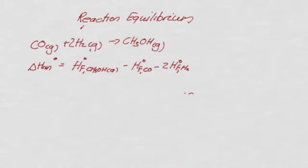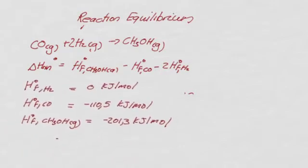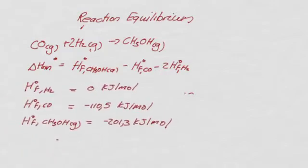We need to look in tables to find values. If we look in the tables, we see that the enthalpy of formation of hydrogen is zero, because that's its standard state. The enthalpy of formation of CO is minus 110 kilojoules per mole, and there's the enthalpy of formation of methanol in the gas phase. Be very careful — the values you use here must correspond to the phases in the equation you're looking at. So in the gas phase, the enthalpy of formation for methanol is about minus 201 kilojoules per mole.